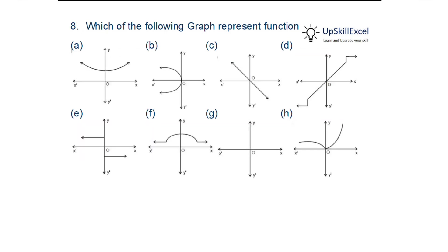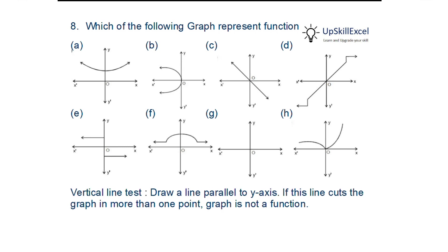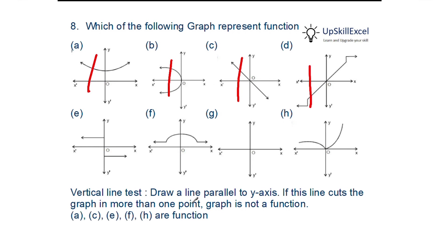Which of the following graphs represent a function? To test this, draw a vertical line — if it cuts the graph at more than one point, the graph is not a function. For example, one graph is cut at only one point (a function) while another is cut at two points (not a function). Applying this test, graphs a, c, e, f, and h are functions.